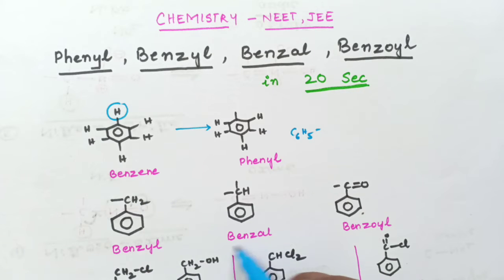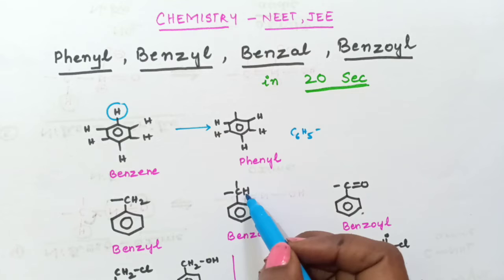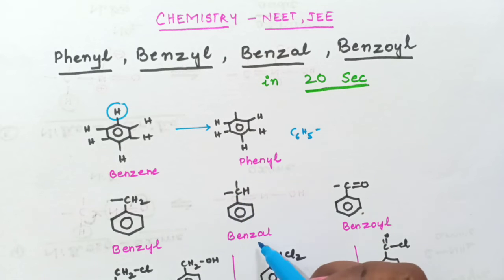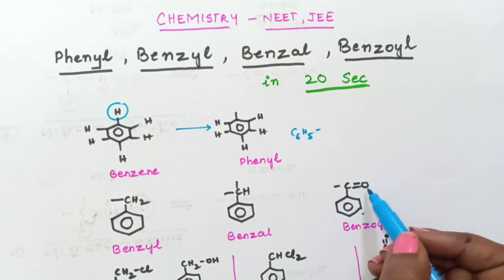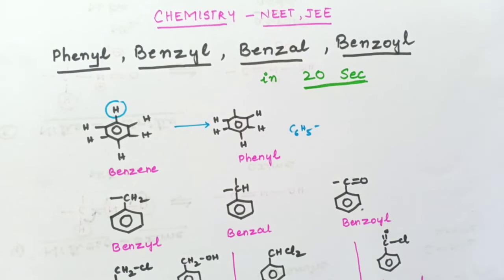And then what is benzal? Benzal is 1 hydrogen atom with the carbon. And benzoyl is carbon double bond oxygen attached to this benzene ring, called as benzoyl group.